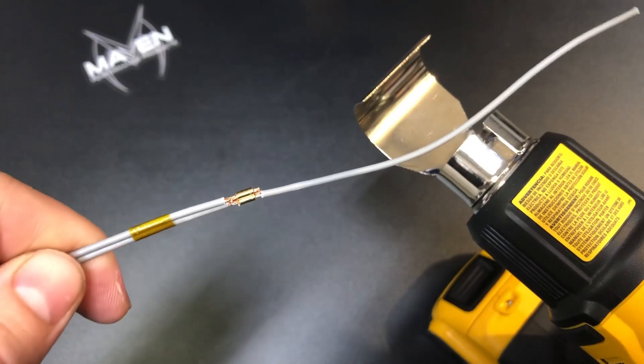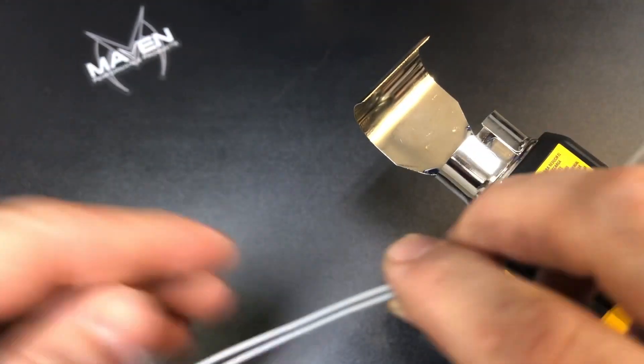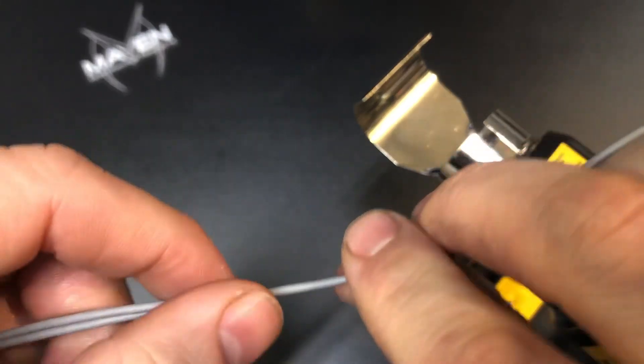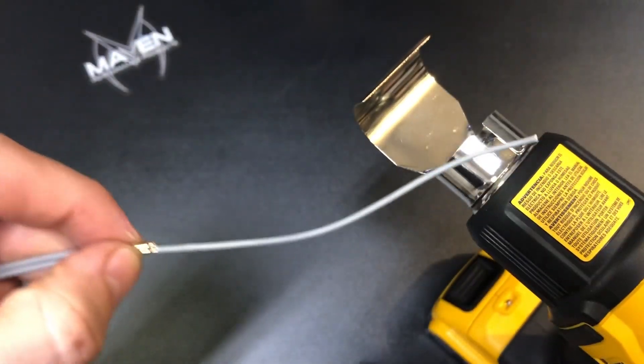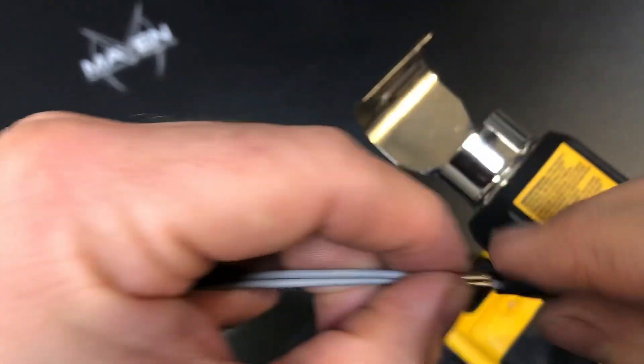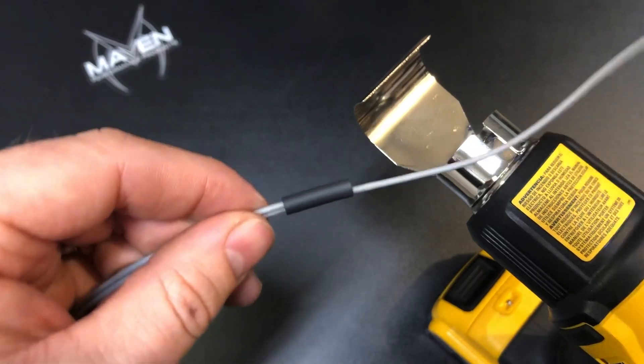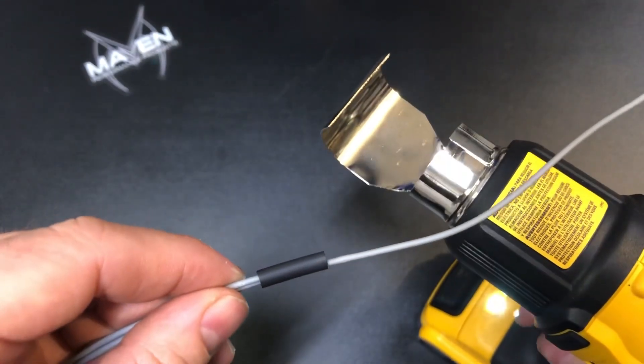All right, I'll go ahead and pull that little piece of Kapton tape off. We had it on there to keep things in place, as you remember. We'll go ahead and slide a piece of adhesive-lined heat shrink on there, get that into place, and then we'll go ahead and shrink it down.